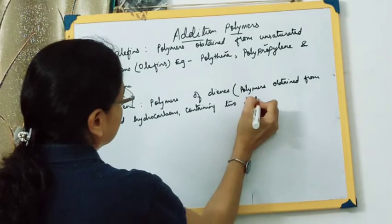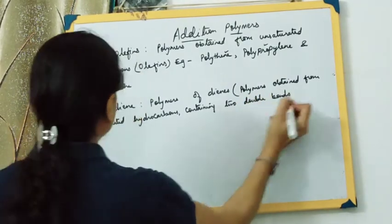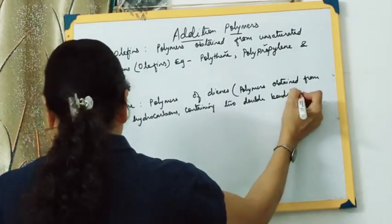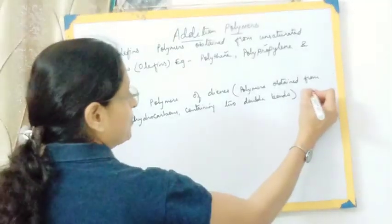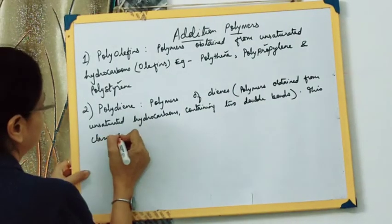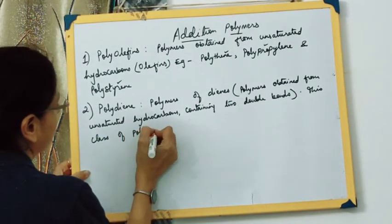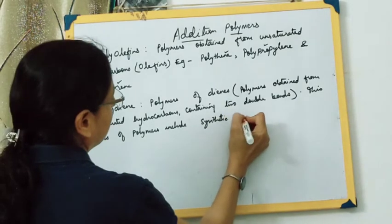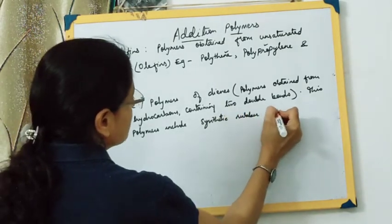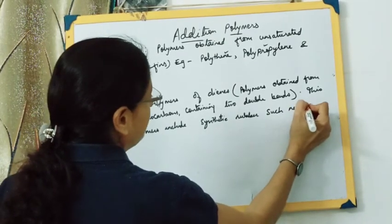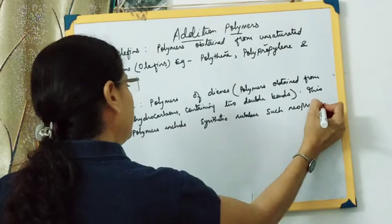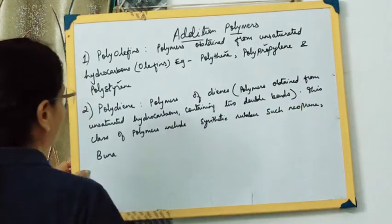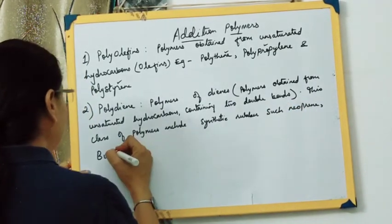Di means two and -ene means double bonds — containing two double bonds. This class of polymers includes synthetic rubbers such as neoprene and Buna-S. We will be studying the preparation of Buna-S here.